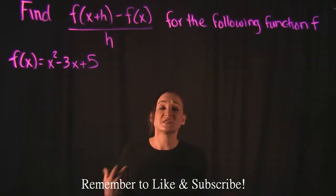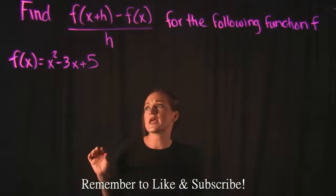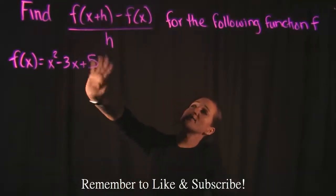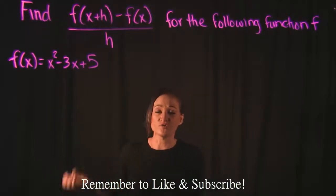So for this video, we're going to find the difference quotient for the following example. We're going to take f(x) equals x squared minus 3x plus 5, and we're going to plug it into the difference quotient, which looks like this.